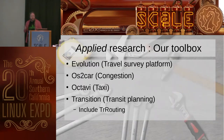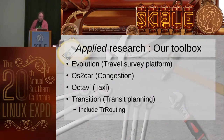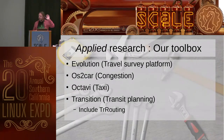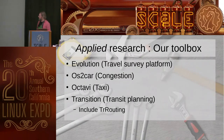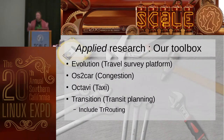We are part of L'École Polytechnique de Montréal, which is an engineering school. Since we do applied research, over the years we developed various tools: one called Evolution, which is a travel survey platform; one called OSCAR, to do dashboarding and monitor congestion in the city; a similar tool about taxi dashboarding; and the tool I'm going to talk about today, Transition, which is all about planning mobility in a city.